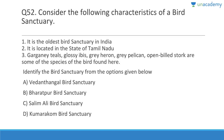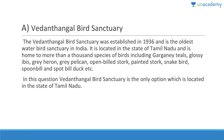Question 52: Consider the following characteristics of a bird sanctuary — it is the oldest bird sanctuary in India, located in Tamil Nadu. Species found here include garganey teals, glossy ibis, grey heron, grey pelican, and open-billed stork. The answer is Vedanthangal Bird Sanctuary, established in 1986. It is the oldest water bird sanctuary in India, located in Tamil Nadu.